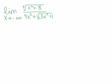Here we're taking the limit as x approaches negative infinity of the cubed root of x to the 6th plus 8 divided by 4x squared plus the square root of 3x to the 4th plus 1.